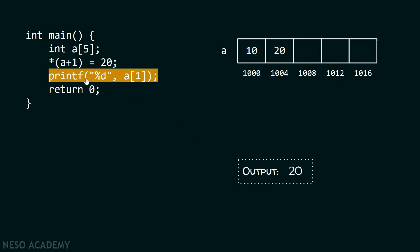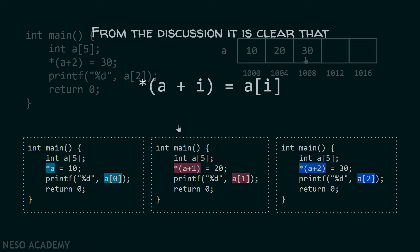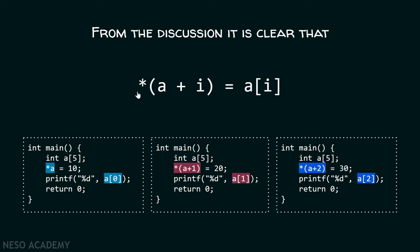I can change this a little more — using (a + 2), we can go to the third location, store value 30 inside it, and 30 will get printed on the screen. From this discussion it is clear that *(a + i) is equal to a[i]. We can see: *a equals a[0], *(a + 1) equals a[1], *(a + 2) equals a[2], *(a + 3) equals a[3], and so on. Therefore, *(a + i) equals a[i].